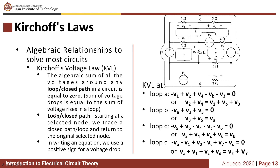What is a loop or closed path? Starting at a selected node, we trace a closed path or loop and return to the original selected node. In writing an equation, we use a positive sign for a voltage drop.